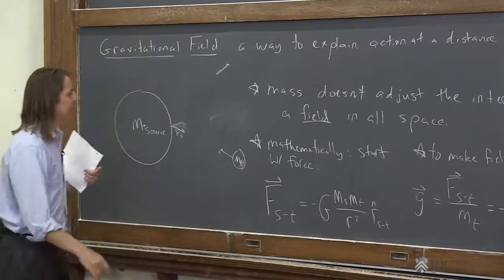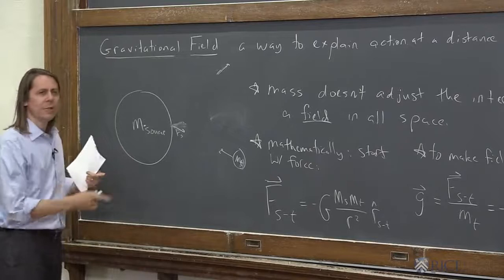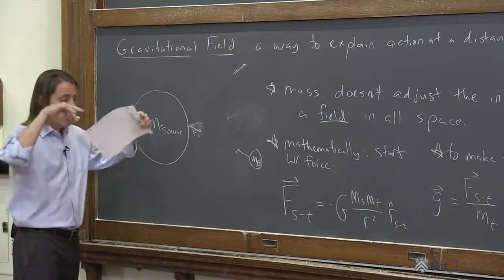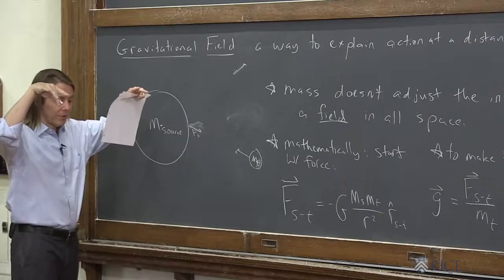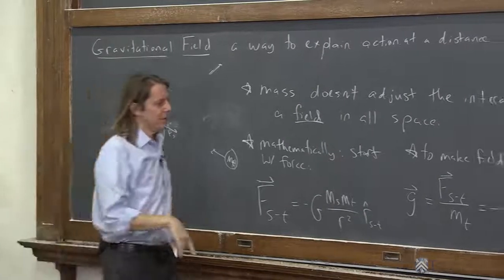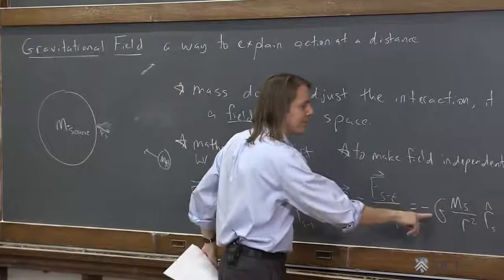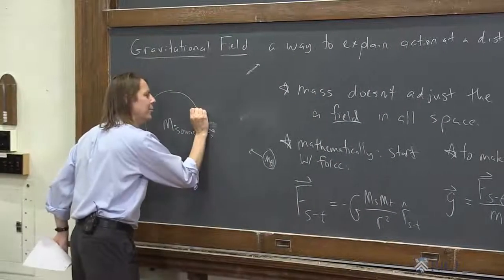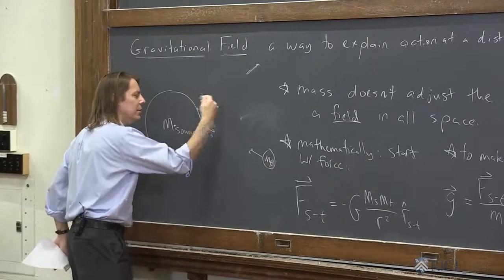So you create a gravitational field, a little g. You say, wait, we already used a little g. It was the acceleration. Yes, that is the gravitational field at the surface of the Earth. It's the acceleration pushing down. If you look at these numbers together, they give you an acceleration. So at the surface of the Earth, a little g is 9.8 meters per second squared down.